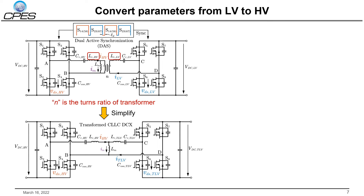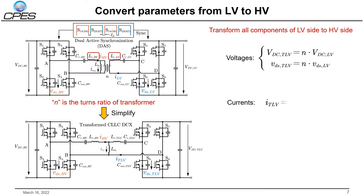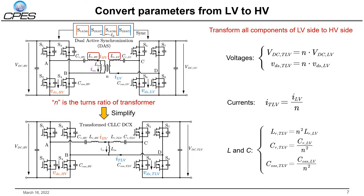In order to simplify the circuit and make a direct comparison between the two sides, the LV side circuit is referred to the HV side with the turns ratio N as shown at the left bottom. The LV side parameters are transformed accordingly, including the voltages, currents, and LC components.